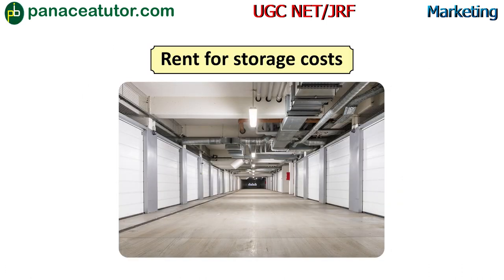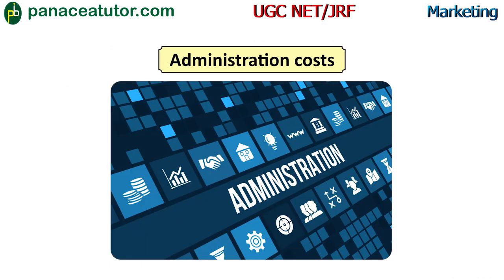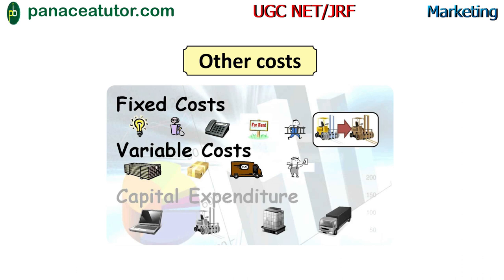The next cost is rent for storage cost — all costs related to renting a warehouse to store goods, i.e., the rent we pay for warehouse space. The next is administration cost — this includes the expenditure on documentation required for both export and import of the product, including invoices, shipping documents, forms for statements, permits or licenses, and certificates. The last is other cost — which covers all remaining costs such as fixed cost, variable cost, capital expenditure cost, etc.